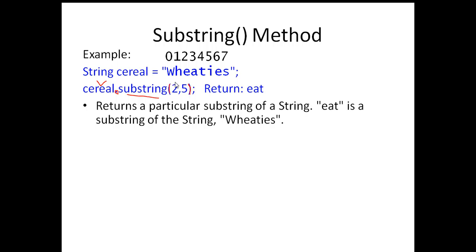In this case, we're going to have parameters inside the parentheses. So it's the variable name, dot substring, and then the parameters within the parentheses. What this is saying is that we're looking for a substring using the two parameters within the value of the variable Serial. In this case, it's going to return 'eat'. A substring returns a particular group of characters that are part of an entire string or literal string. 'Eat' is a substring of the string 'Wheaties'.